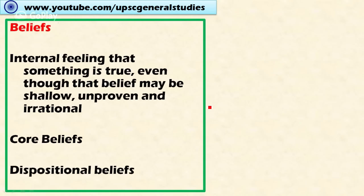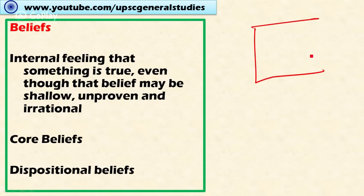Now let's look at beliefs. Beliefs also influence the behavior of a person. Beliefs are the inner feelings that something is true, even though that belief may be shallow, unproven, or irrational. For example, you may believe that all Chinese are selfish or against India's interest — that is a belief you hold as true even though it may be unproven. Some people believe Hitler was a great leader, which is irrational. It is proven that Hitler was a great dictator, but he was not a good human being or a great leader. Beliefs can sometimes go wrong.